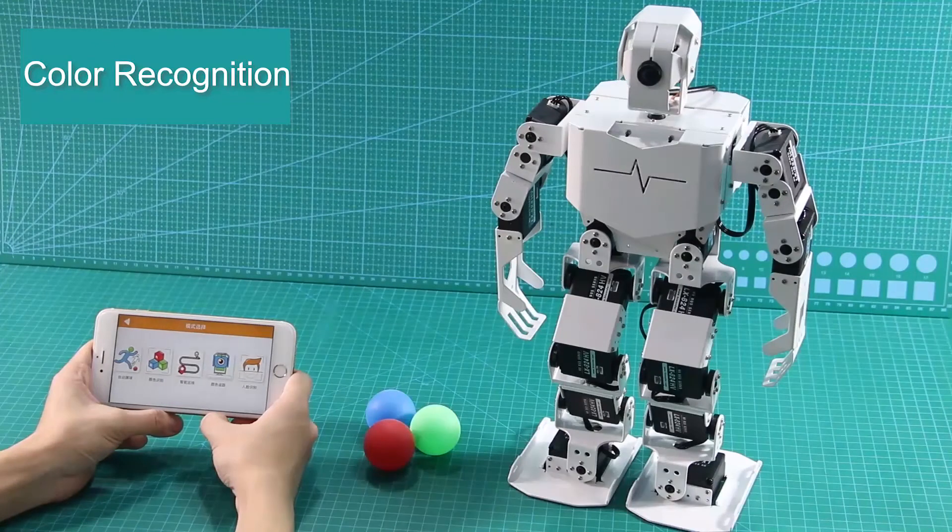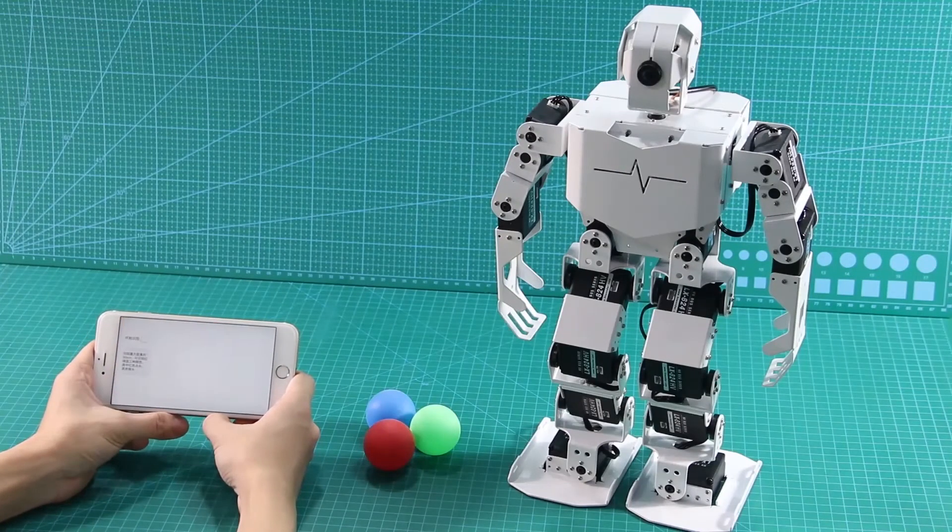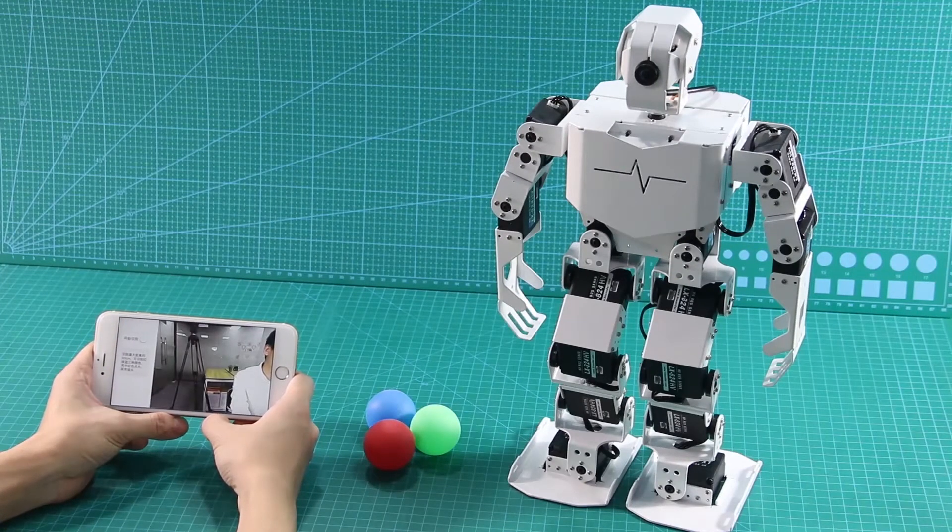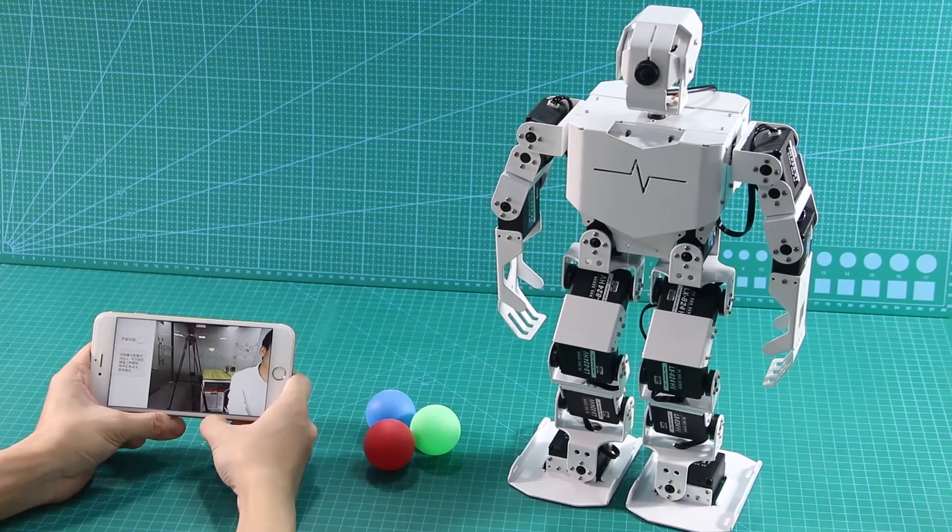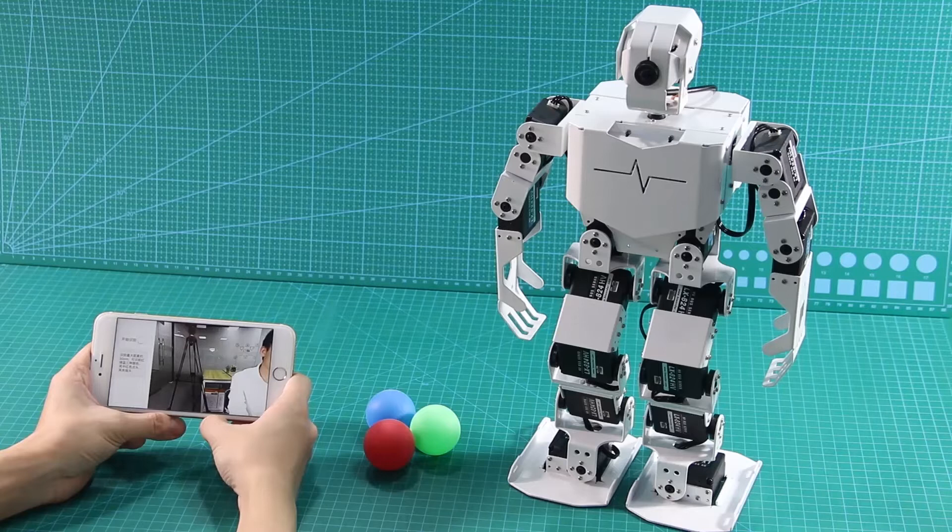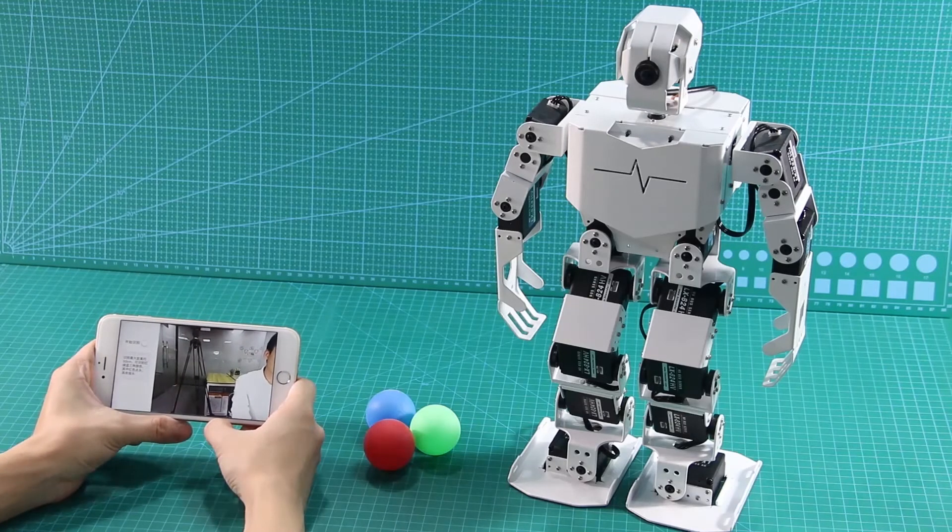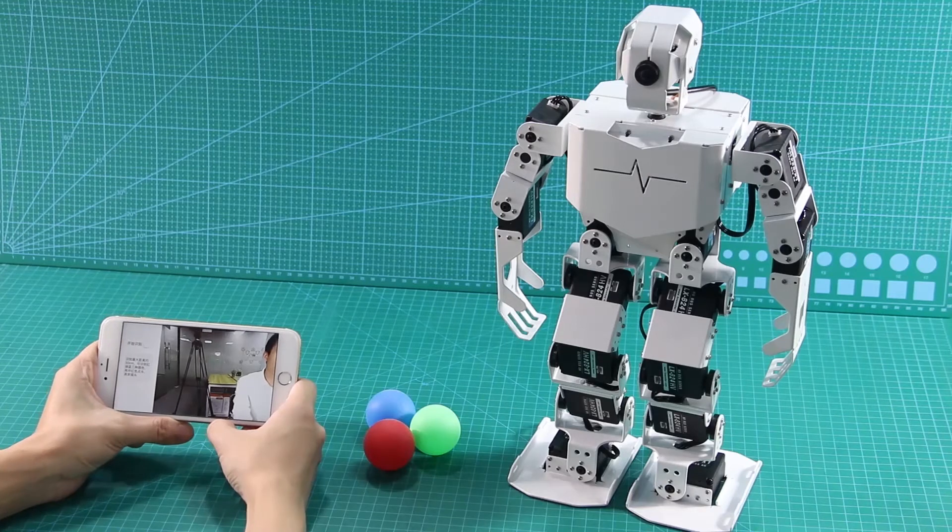The next game is Color Recognition. Click Color Recognition. The default color is red. Therefore, TonyPi will not want to detect red and will shake its hand when green and blue are detected. You'd better start this game in a solid color background for better performance.